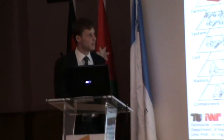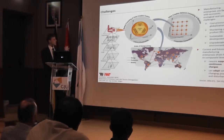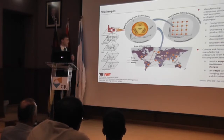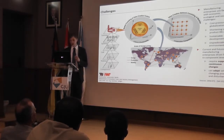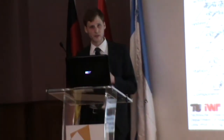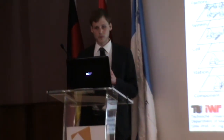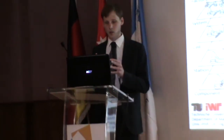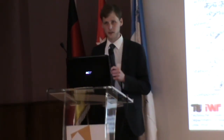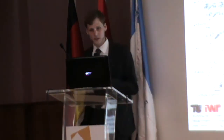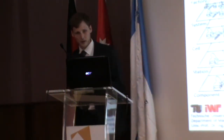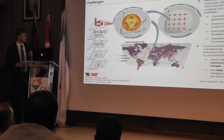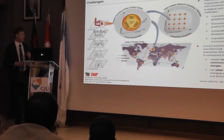When we go a bit deeper and have a look at our factory, we can see here the value creation module, which consists of five value creation factors. With these factors I can describe a factory as a whole — what the factory is producing, the process, the organization around this, the equipment, and most importantly the human, the people who are doing the organization and processing of the goods.